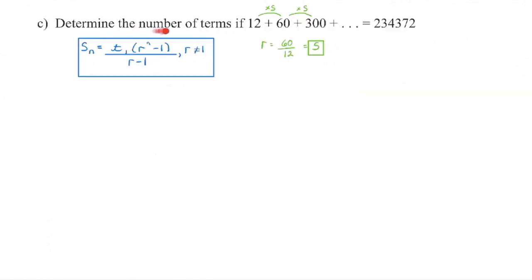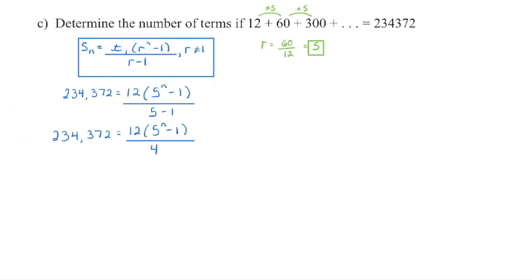We are now looking for the number of terms, n, in this particular series. First we determine whether it's arithmetic, geometric, or neither. We can see we're multiplying by a common ratio of 5 each time, so a lot of this is just substituting into the formula. We enter term one, the common ratio, and we know the sum is 234,372. Substituting that in place of the sum, we're looking to determine n. First, simplify: subtract 5 minus 1 in the denominator to get 4, and 12 divided by 4 simplifies to 3. Then divide both sides by 3 — the right side becomes 1.